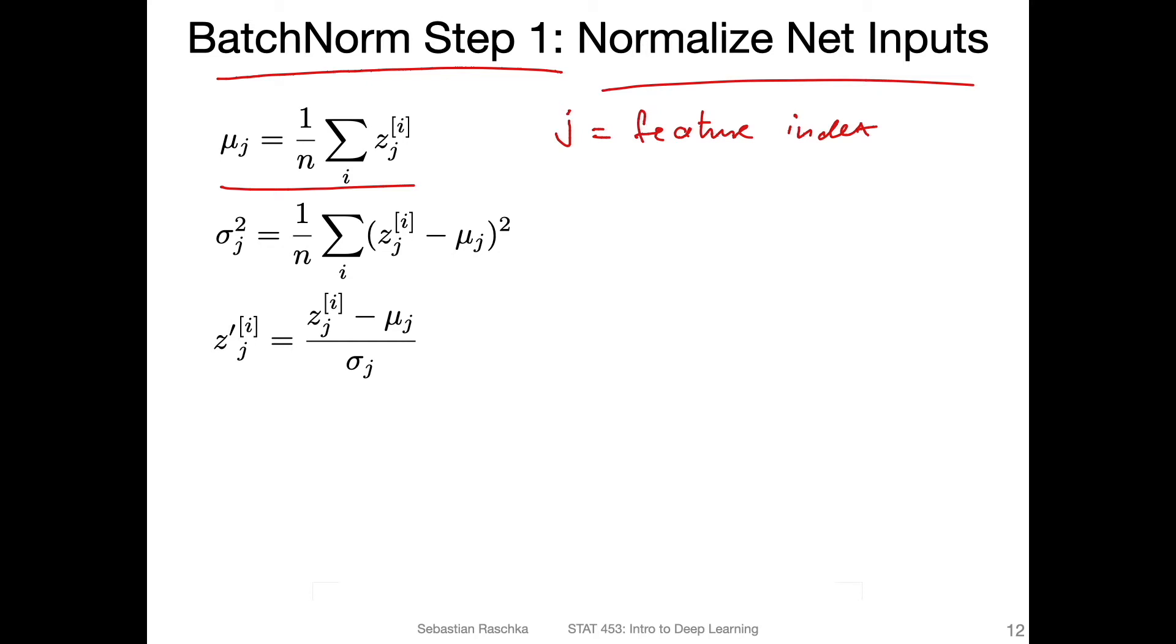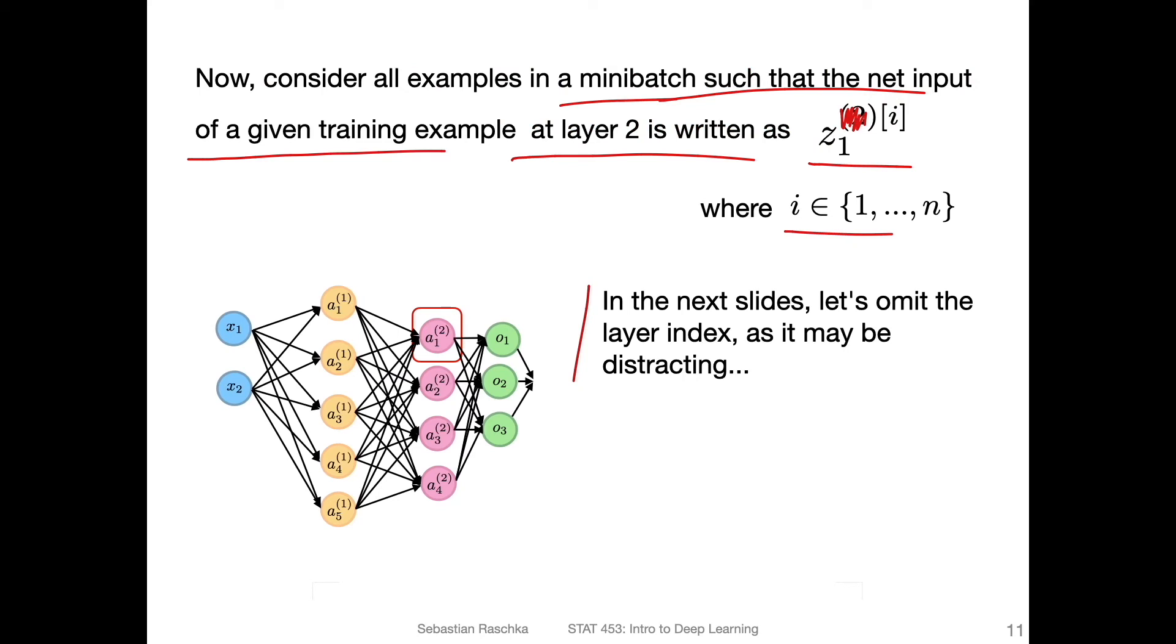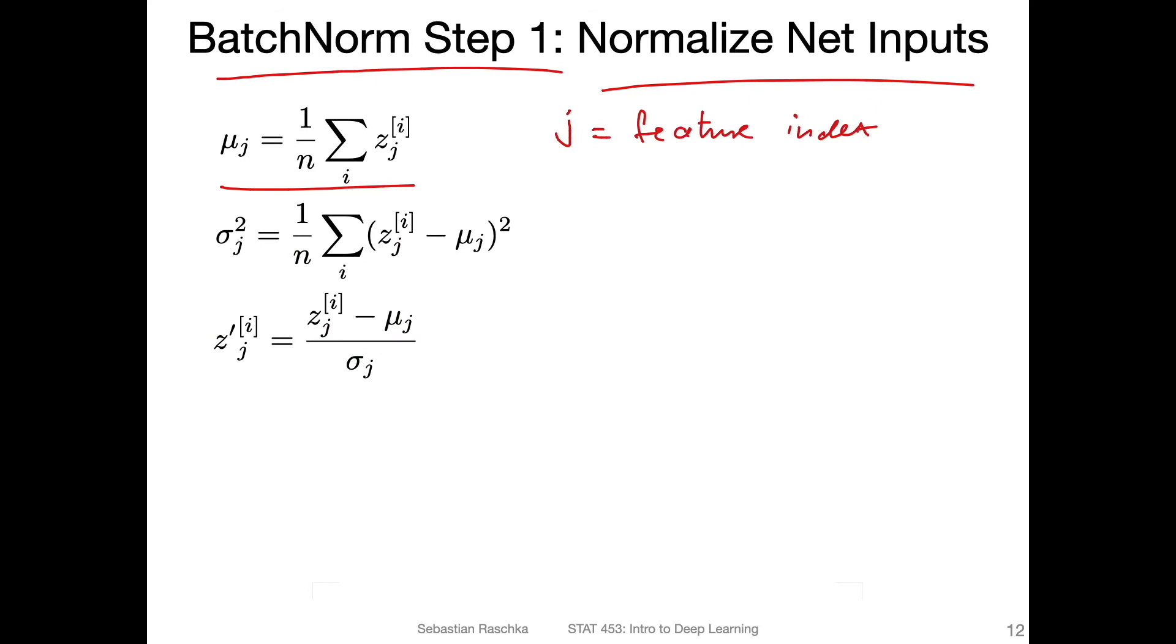So let's say we have the j-th feature. If I go back and consider this activation here, what are the features? The features are essentially all the previous layer activations, right? So all these go into that activation. So all of these here are the features of this activation.